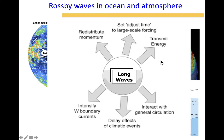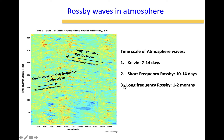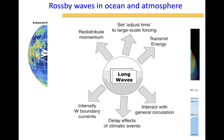Finally, long waves — which persist for longer durations — have a very large imprint on weather and climate. They can redistribute momentum, adjust to large-scale forcings like El Niño or the MJO, transmit energy for longer durations, interact with general circulation cells such as the Hadley cell or ocean circulation cells, delay climatic events because of the non-linear relationship between waves and large-scale forcings, and intensify boundary currents. Long frequency Rossby waves near the equator are very difficult to predict, and their imprint on cyclones and monsoon is an area of active research.